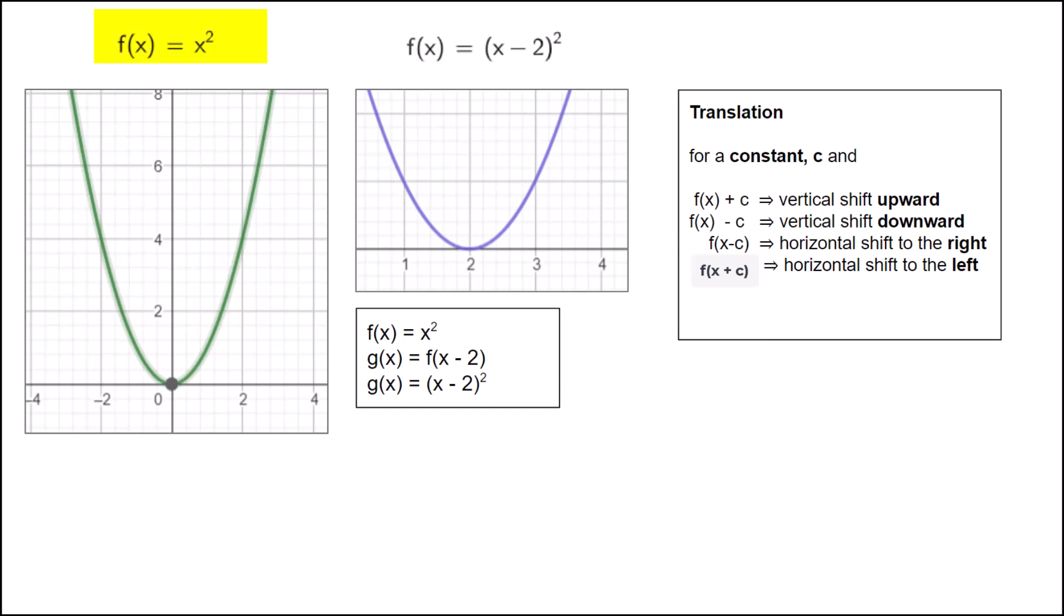For example, we have y equals x squared. If we wanted to shift this two units to the right, we would evaluate f(x - 2). When we do that, we fill in x minus 2 everywhere we have an x, giving us (x - 2) squared.